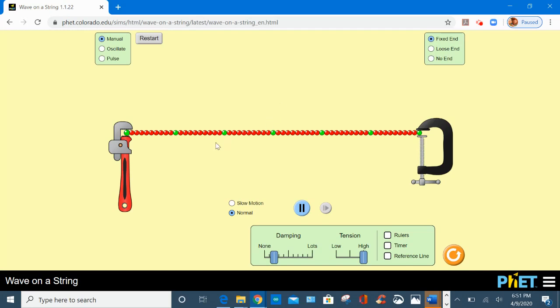The string is represented by the red-green beads and attached at one end by three sources of wave generator and at the other end by three options: a fixed end represented by a clamp, a loose end with a ring around the pole, and no end with an open window.